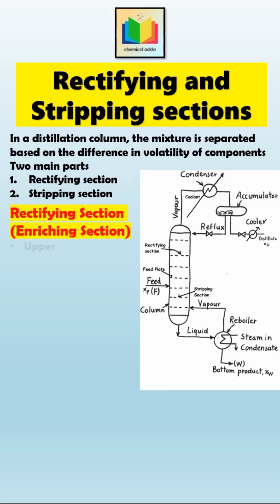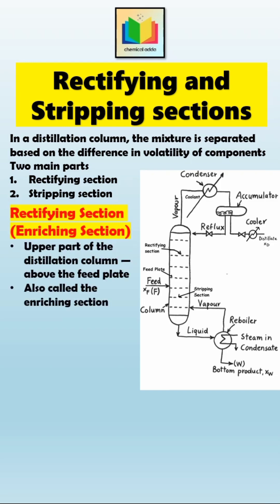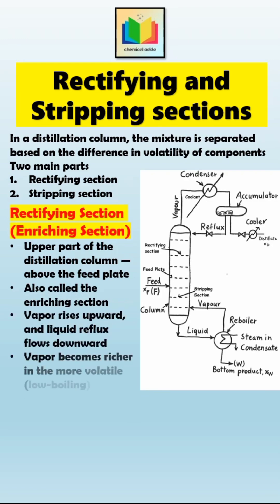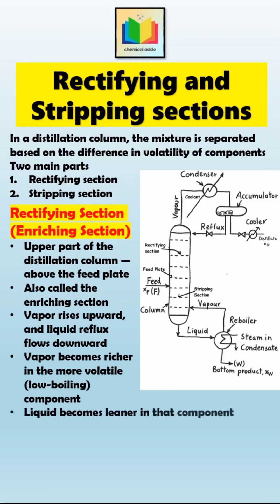The upper part of the distillation column, which is above the feed plate, is called the rectifying section, also known as the enriching section. Here, vapor rises from below and liquid reflux flows downward from the condenser.